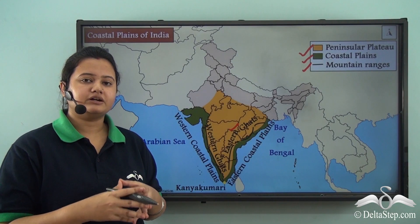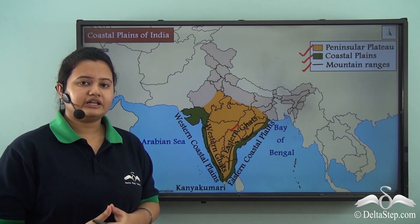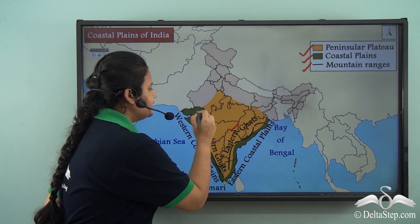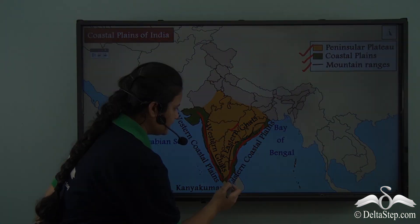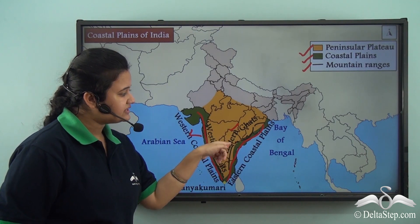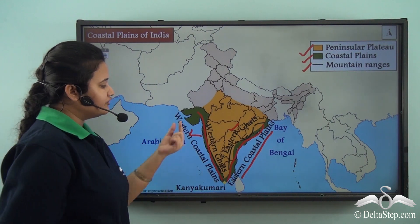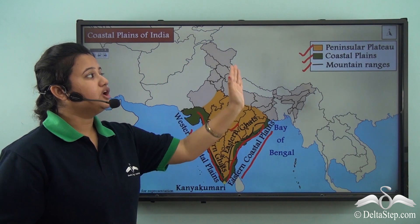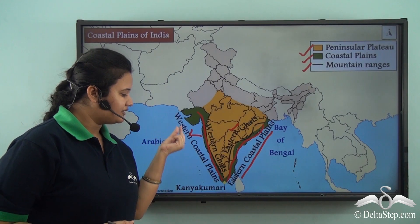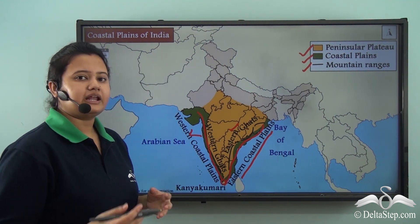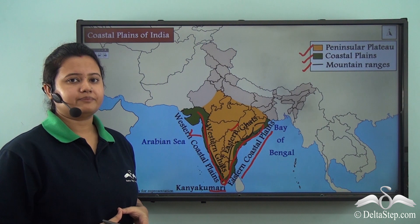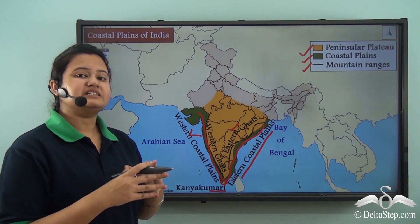In today's lesson we shall be discussing about another major physical feature of peninsular India — that is the coastal plains. These coastal plains are very long and they form the margin of the Indian peninsula. The plain lying to the west of the Western Ghats is known as the western coastal plain, and the plain lying to the east of the Eastern Ghats is known as the eastern coastal plain. The eastern and western coastal plains meet at the southernmost tip of mainland India, that is Kanyakumari.